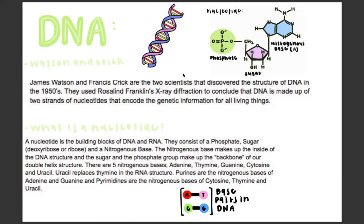There are five nitrogenous bases: adenine, thymine, guanine, cytosine, and uracil. Uracil replaces thymine in the RNA structure.